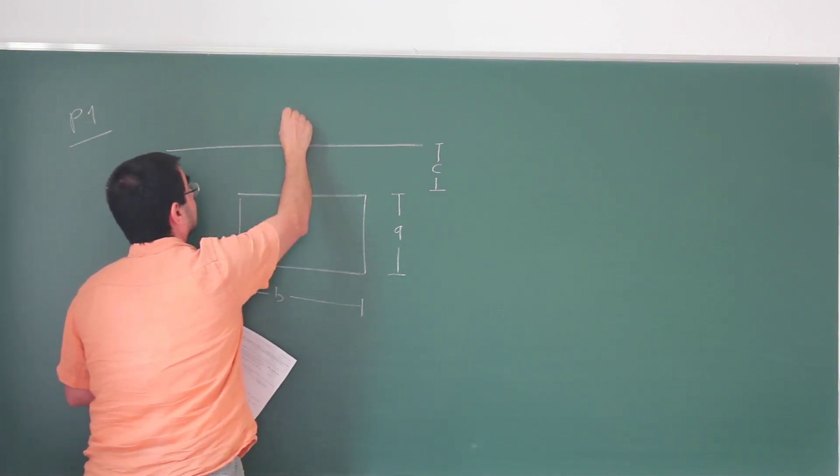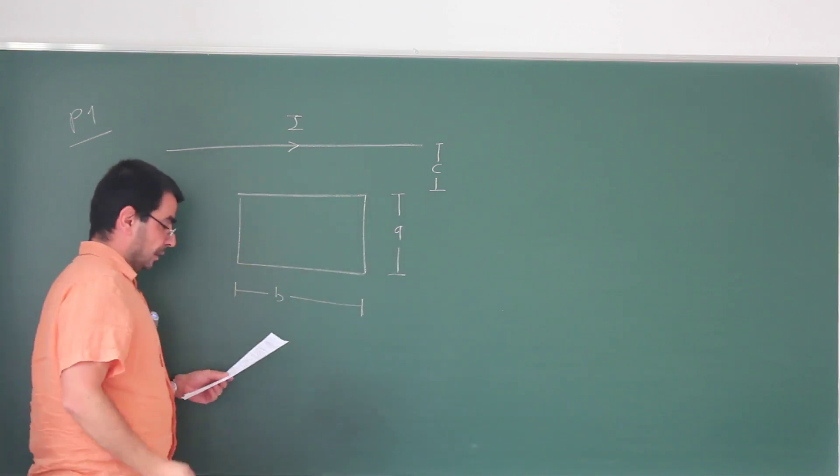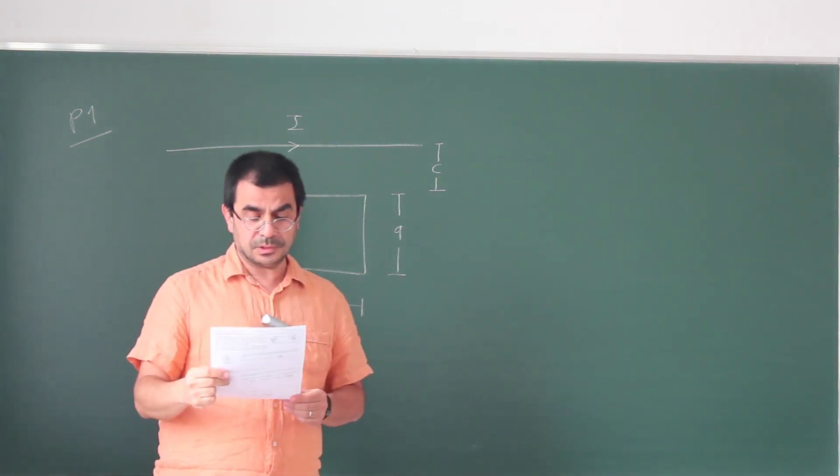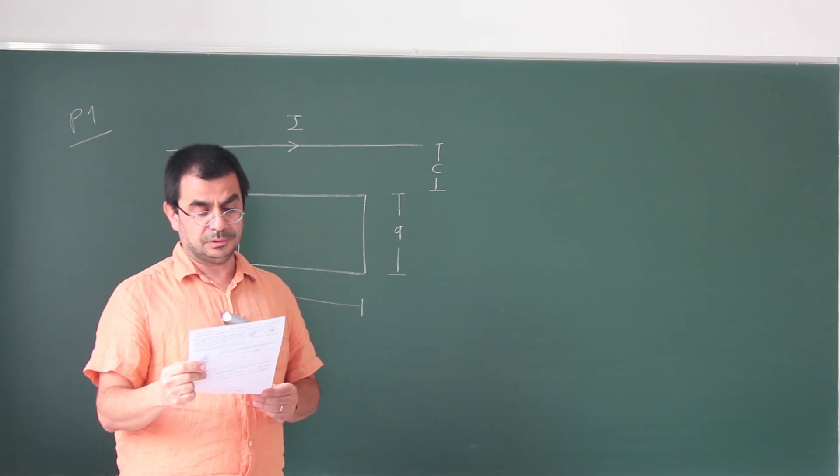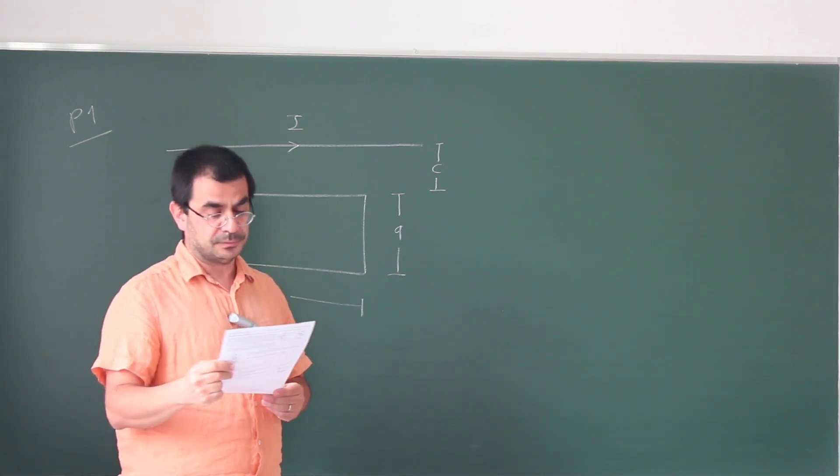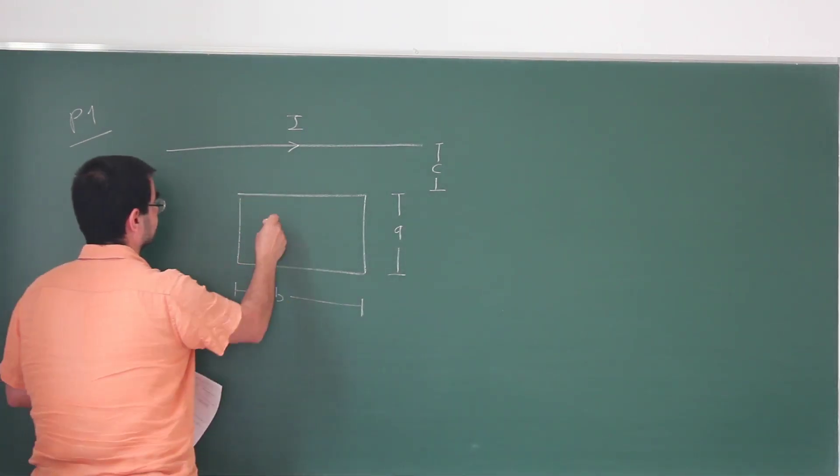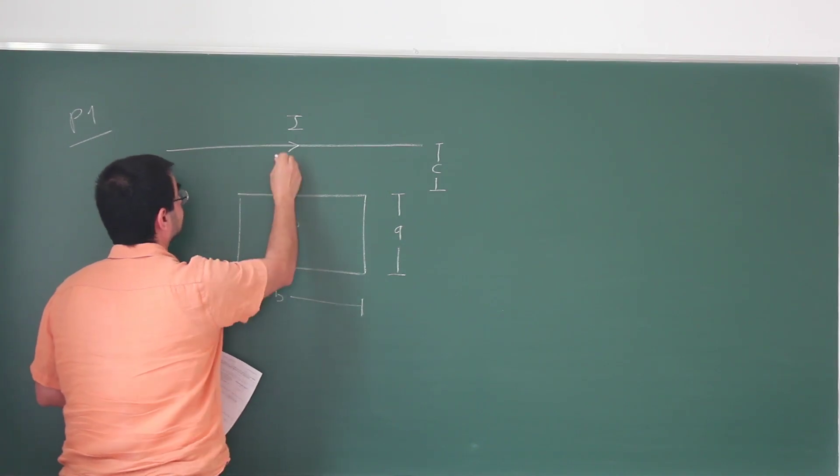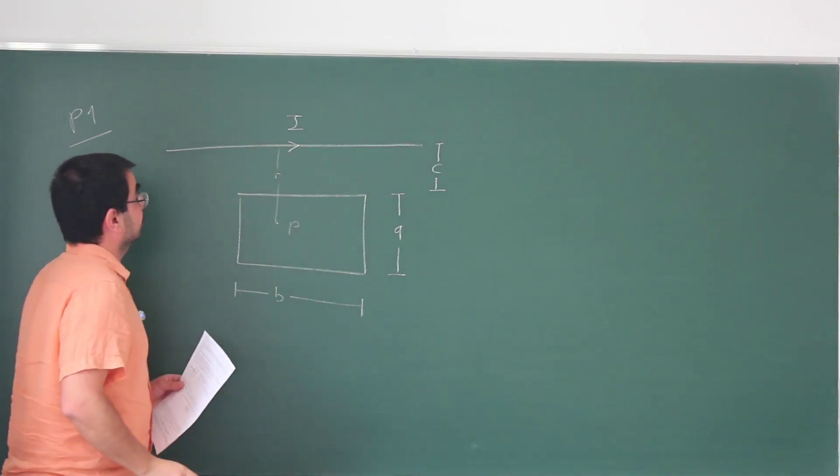The wire is carrying a current I in this direction and in part A they are asking, using Ampere's law, calculate the magnitude and direction of the magnetic field due to the infinite wire at point P, a distance R from the wire. I think this is the point P that's given, this is of distance R from the wire itself.